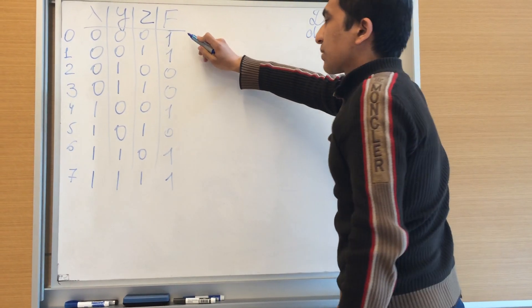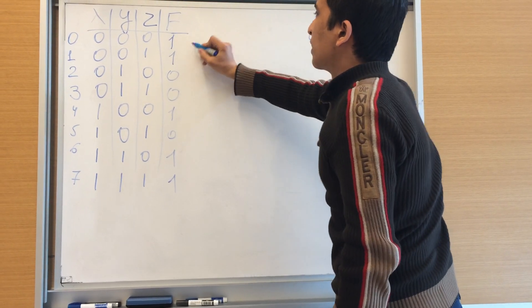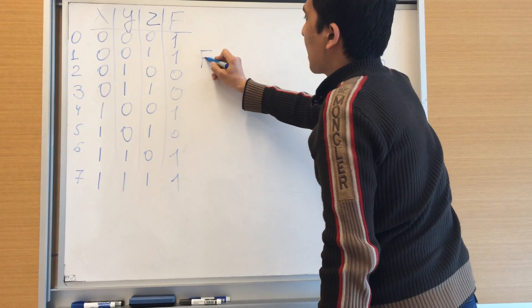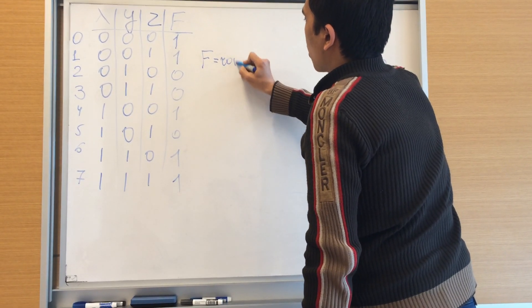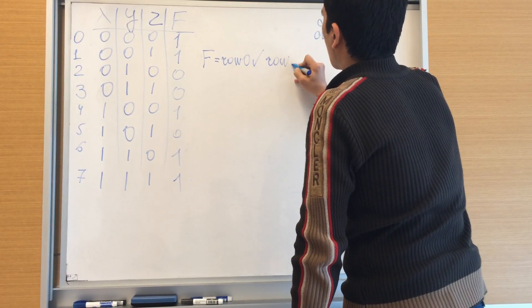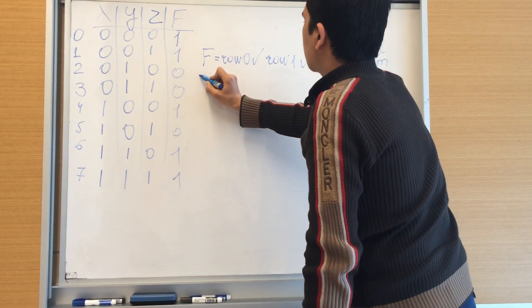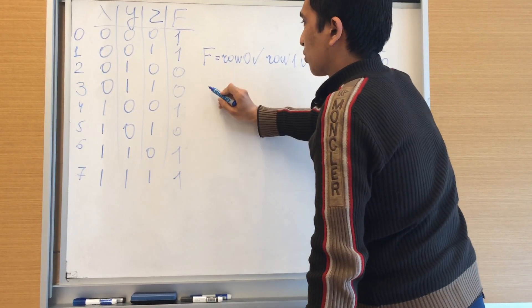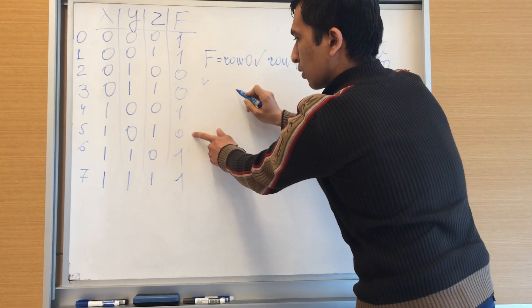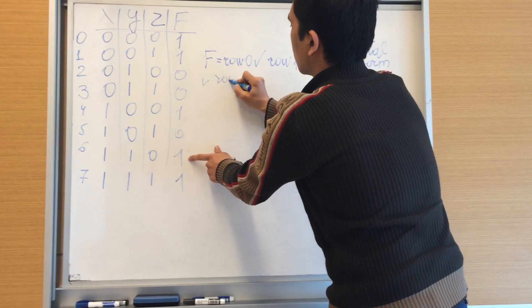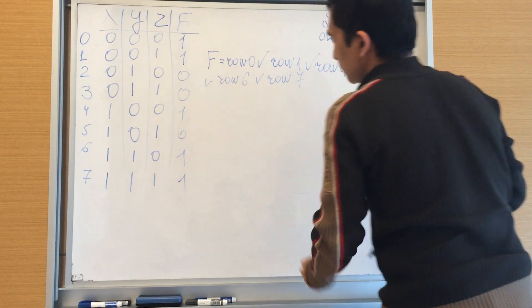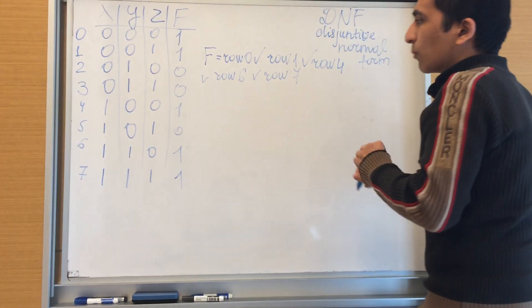For having DNF, we have to take the rows which result in one. It means our function will be F equals row zero or row one or row four or row six or row seven. And let's make them more clear, row five, F is equal to.